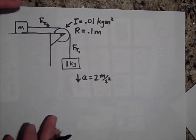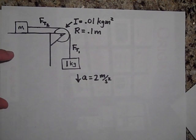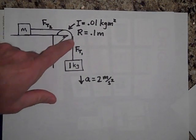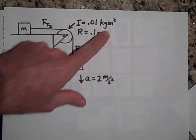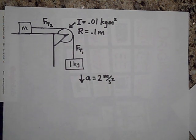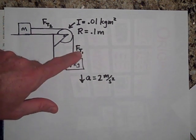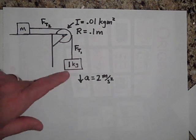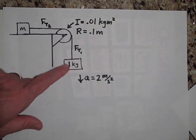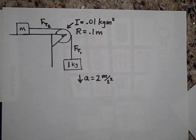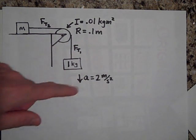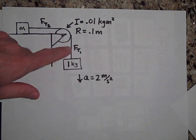Here's an Atwood's machine. This is an unknown mass. The pulley has a rotational inertia of 0.01 kg·m² and a radius of 0.1 meters. The two tensions in the rope are not equal — if the pulley has mass, the tensions are never equal. The one-kilogram mass is accelerating downward at two meters per second squared. Can you tell me what tension FT1 is? Go ahead and pause.